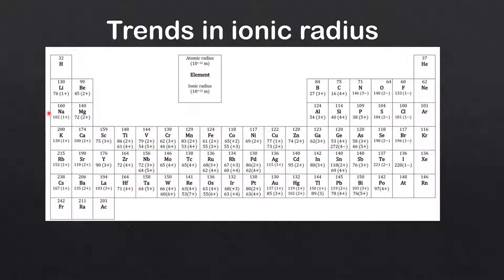If we look at the trend in ionic radius across a period, for example period 3, you can see that the ionic radius decreases from sodium to phosphorus, but then when we get to sulfur it starts to increase again. That's because we are forming positive ions for sodium, magnesium, aluminium, silicon, and phosphorus, and we are forming negative ions for sulfur and chlorine.